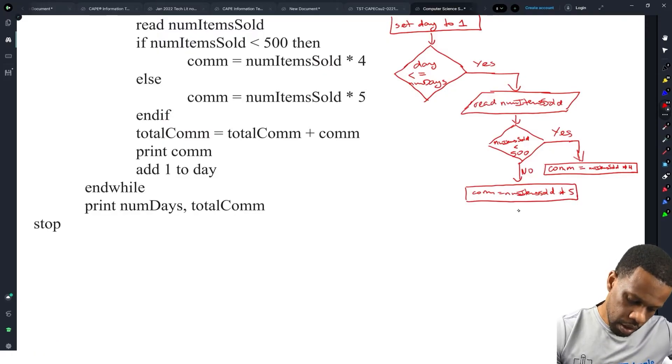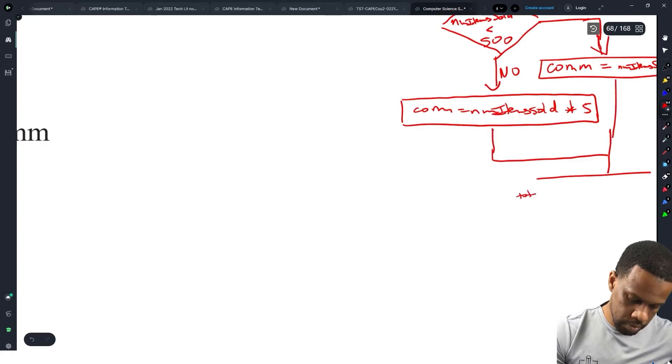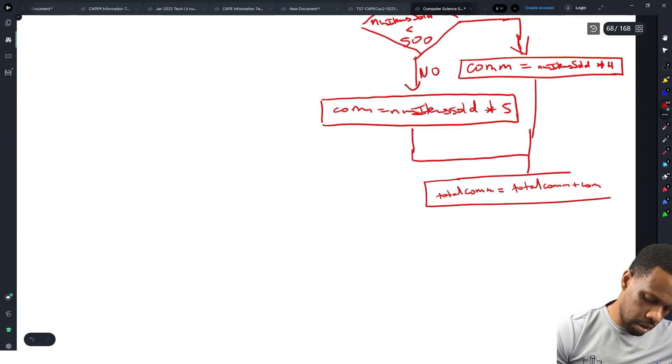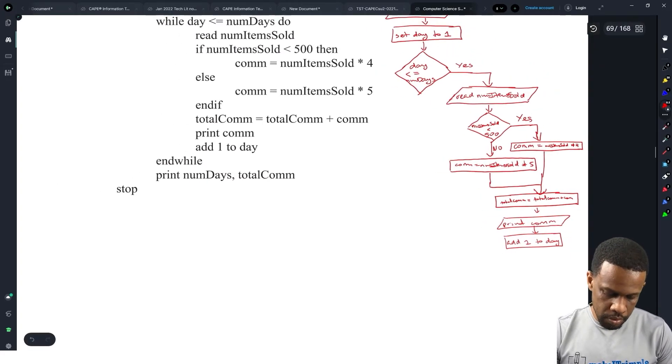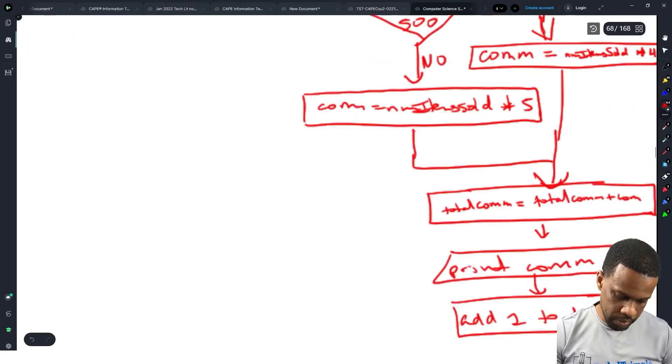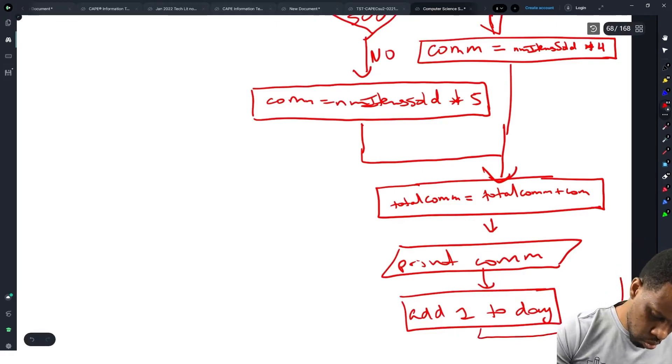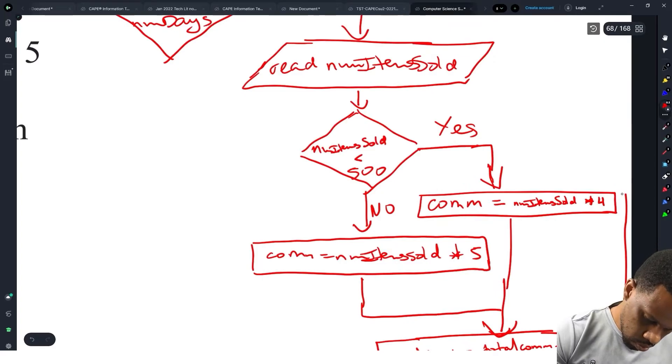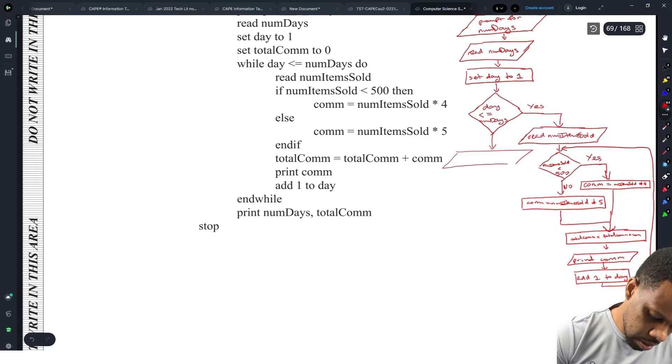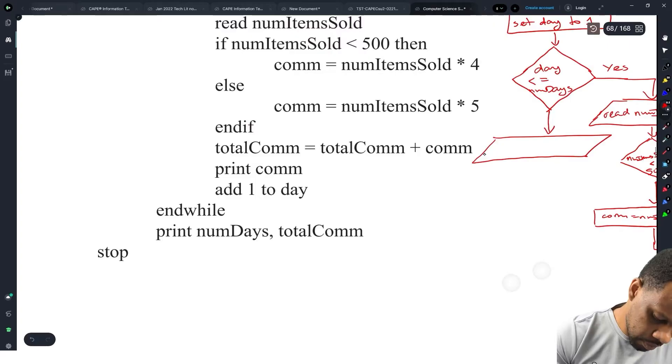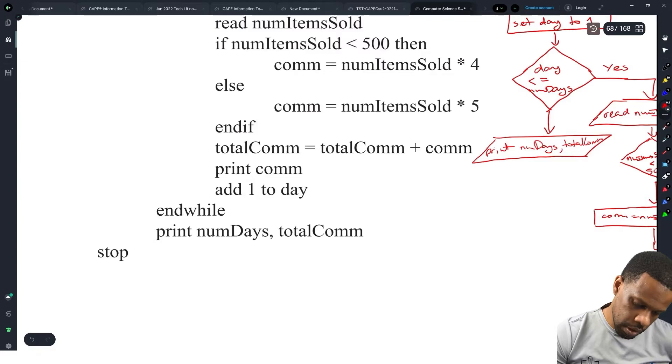Com equal to num items sold by four. Alright so com is num items sold by four. Else the no would be com is num items sold by five. When those two end they are going to meet up with total com is equal to total com plus com. Then we're going to go to print com which is going to be a parallelogram. And now we have to add one to day.